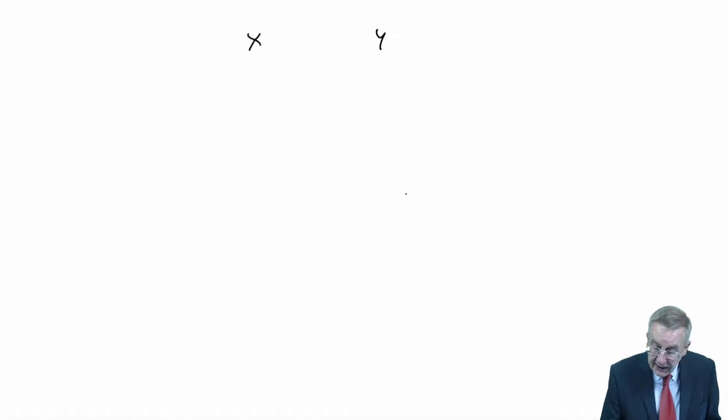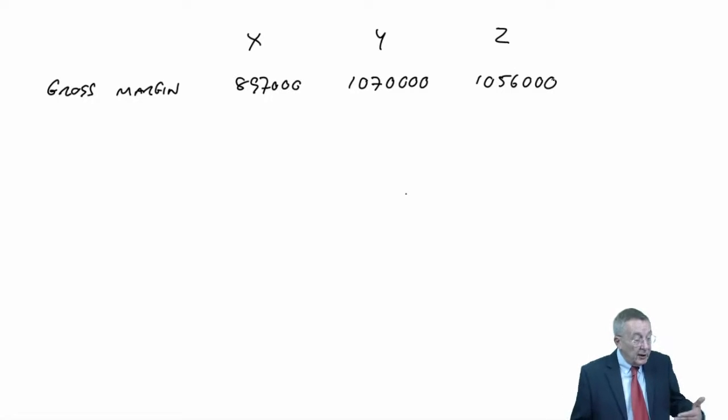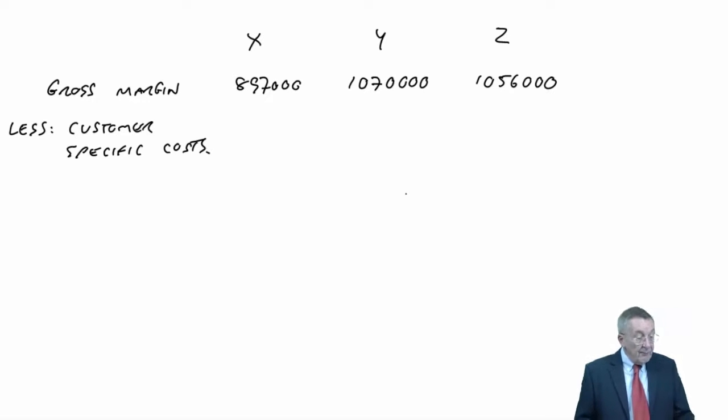So, our customers are X, Y, Z. We know the gross margin. But let's charge against that an amount for the cost of all the sales visits, the cost of processing the orders, and so on. If we subtract the customer-specific costs...